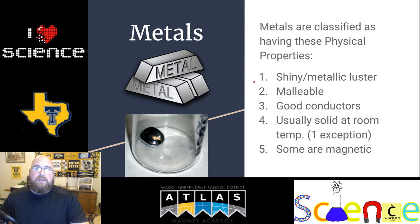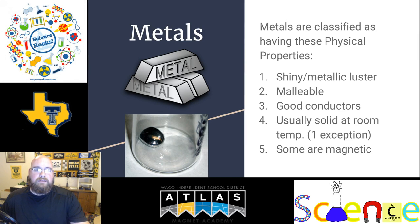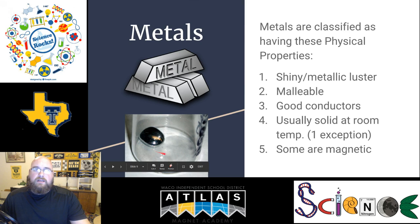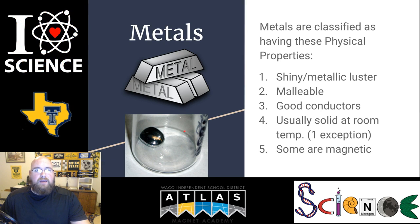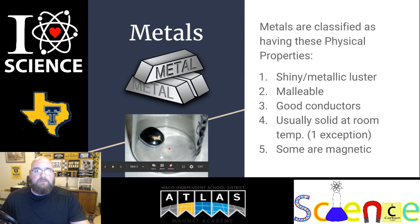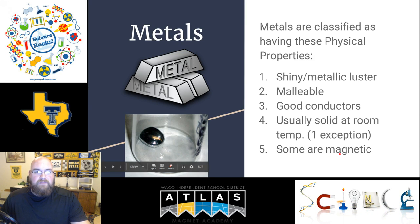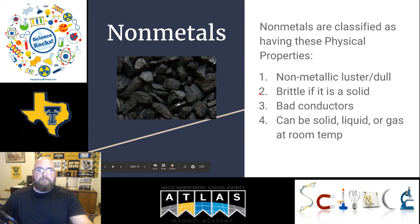Metals also tend to be good conductors of electricity and heat — that's why we use metal in cookware. Usually they're solid at room temperature, with one exception: mercury. Mercury is a metal in the liquid state at room temperature and is also a very poisonous substance to humans. One more interesting thing: a few metals are magnetic, though not all metals have this trait.